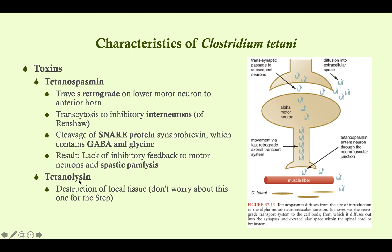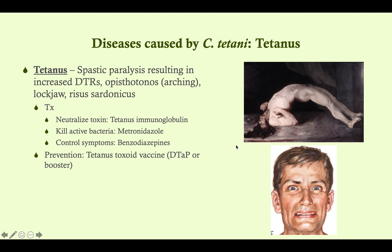The other toxin of tetanus is called tetanolysin, which causes destruction of local tissue, but this is not tested on the Step exam. The disease is tetanus — spastic paralysis that results in increased deep tendon reflexes, opisthotonus (arching), lockjaw, and risus sardonicus, which is Latin for an evil smile. You can see that depicted here.